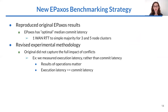We reproduced the original EPaxos results, confirming that EPaxos achieves optimal median commit latency. However, we concluded that the original evaluation did not fully exercise the protocol's response to conflicts, and we developed a revised experimental methodology. The original evaluation measured commit latency, which is only meaningful for operations that don't return a result, such as blind writes. Our paper argues that for most writes and all reads, the client needs the results, and so we must measure execution latency.